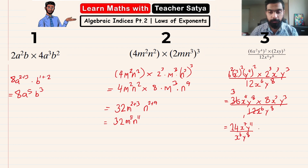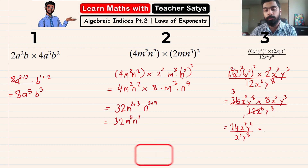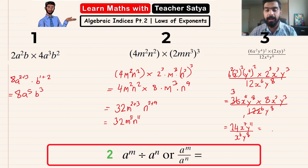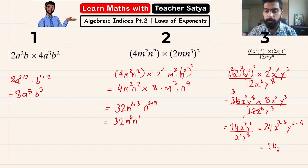We are almost finished. Since x and x share the same base, and y and y share the same base, and they are dividing, we can use the second law. So we have 24, x to the power of seven minus six, and y to the power of eleven minus eight. The final answer is 24x to the power of one and y to the power of three.